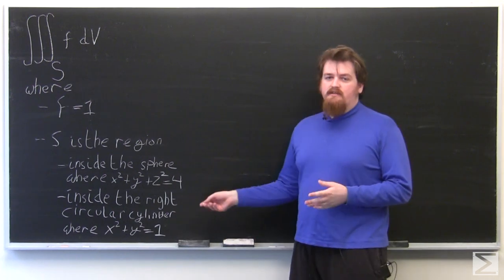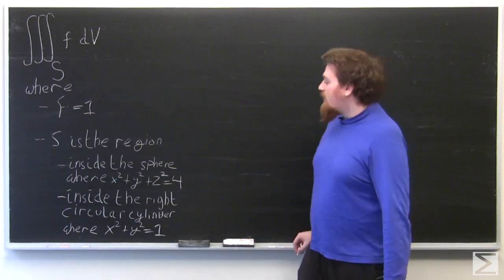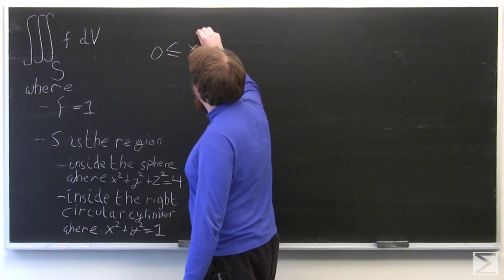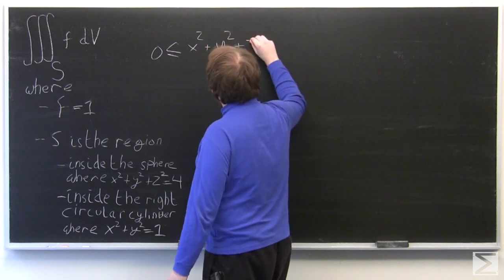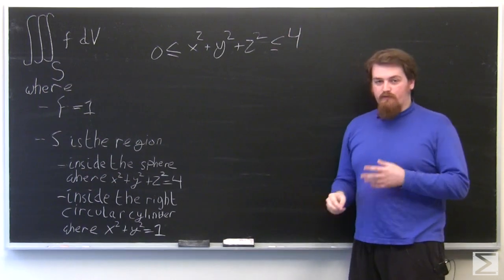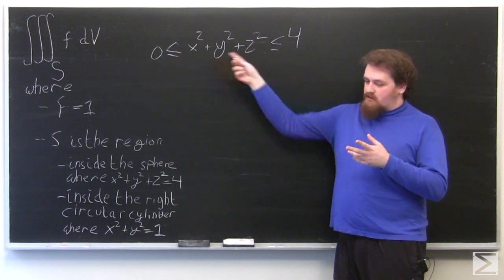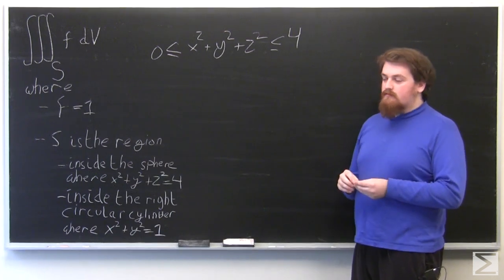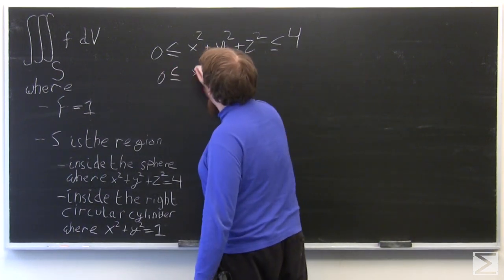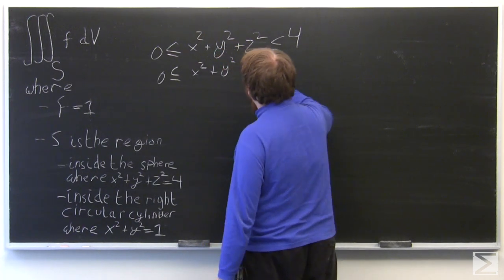These conditions on S can be translated into inequalities. The first one is 0 ≤ x² + y² + z² ≤ 4, where the 0 is on the left because these are all squares which can never be negative. Additionally, for the cylinder, we have 0 ≤ x² + y² ≤ 1.